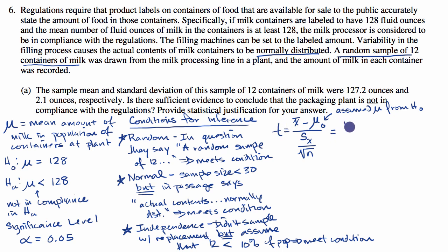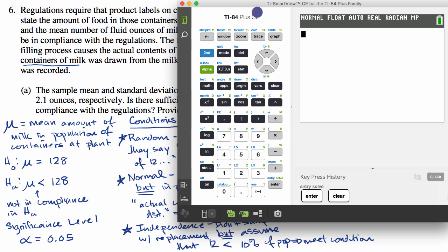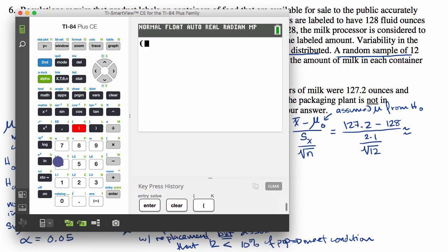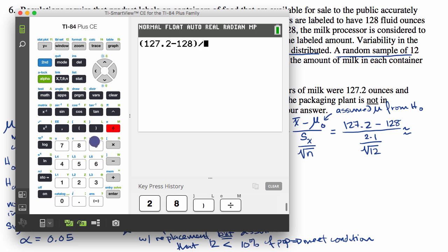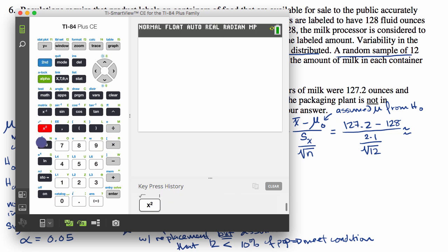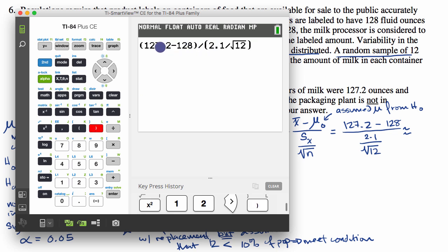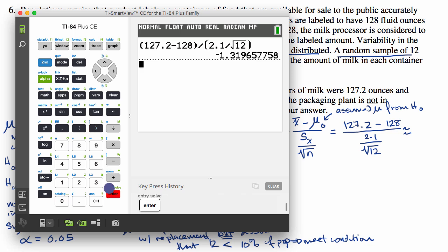So this is going to be 127.2 — our sample mean — minus 128, our assumed mean from the null hypothesis, all divided by 2.1 divided by the square root of 12. Using a calculator, this is approximately equal to negative 1.32.